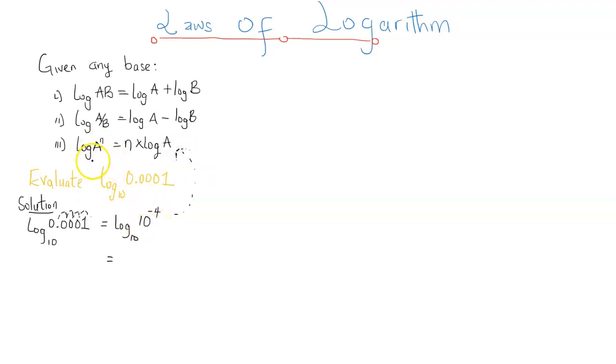So this is going to be negative 4 times log 10 to base 10 is 1, and we can see that log 0.0001 base 10 is negative 4.